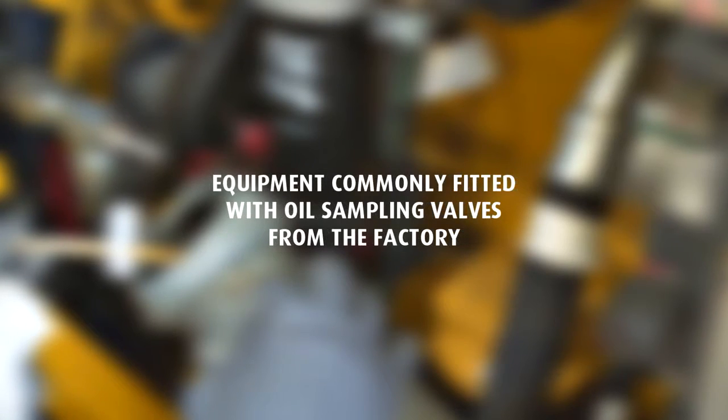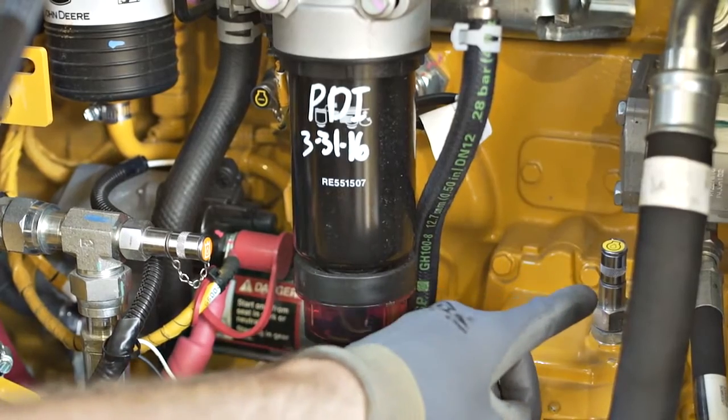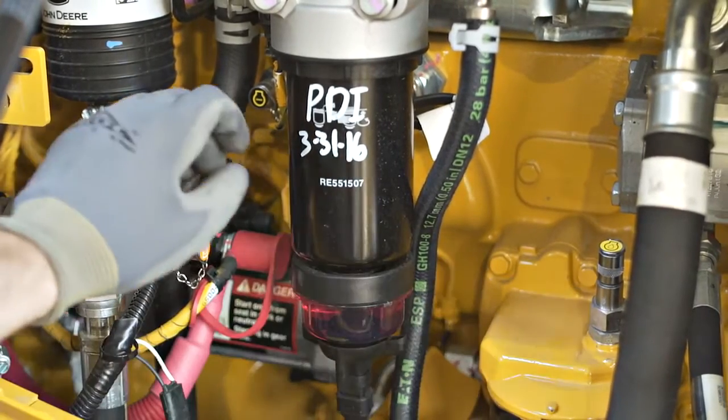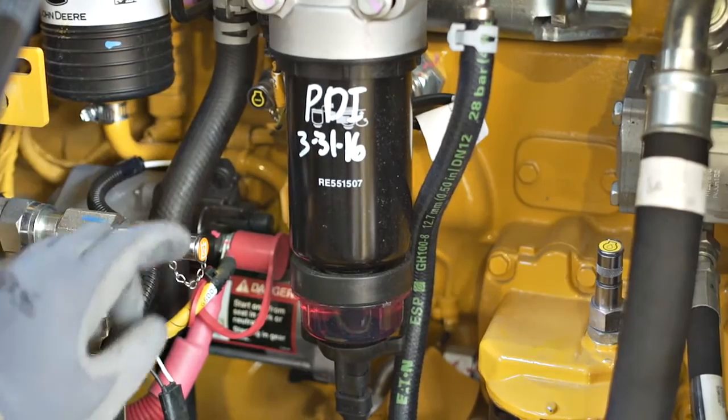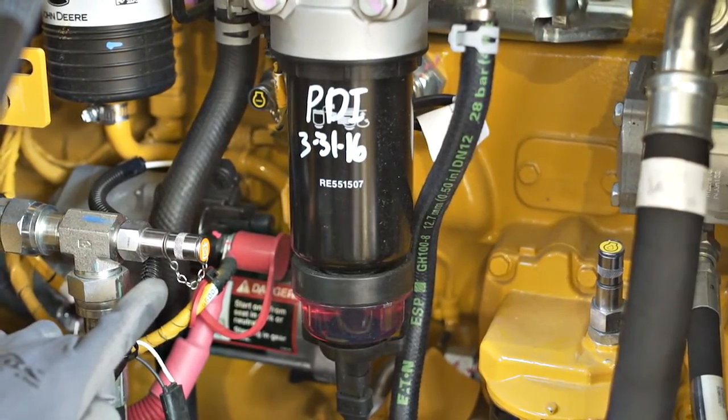Equipment is commonly fitted with oil sampling valves from the factory. If installing an aftermarket inline sampling valve, they should be installed upstream of any filter in order to capture wear particles and preferably on return lines.